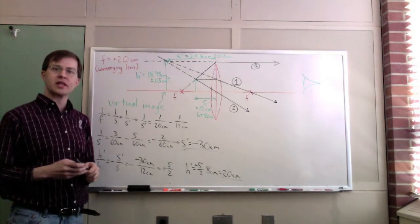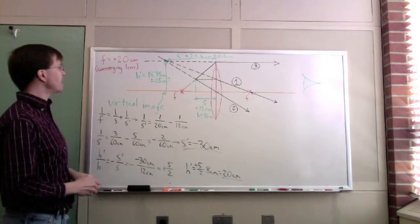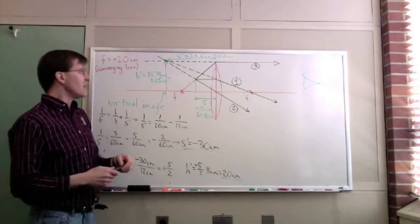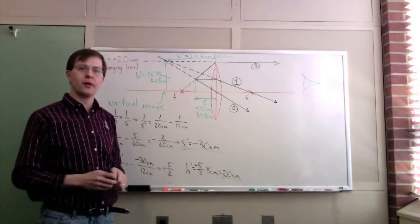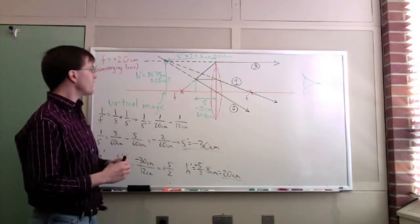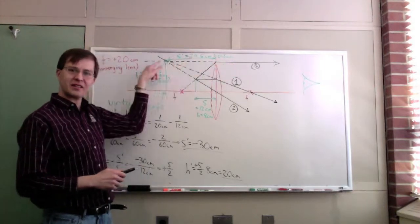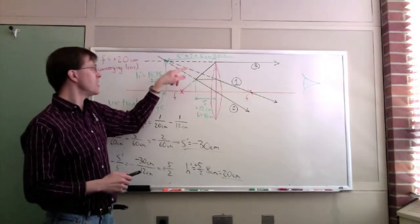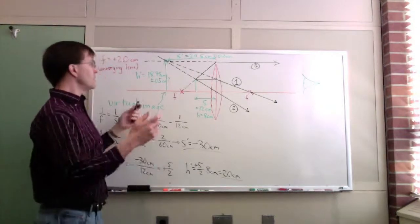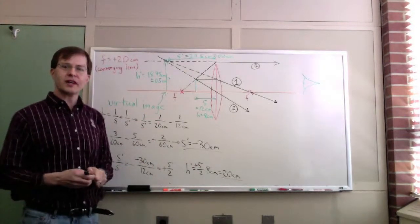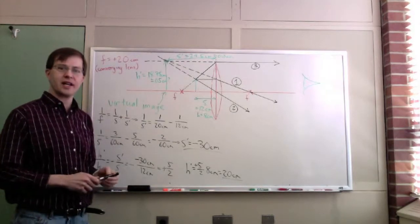That's another example of ray tracing with a double-check from the lens equation, and it works out well. The third principal ray is the trickiest one, but it's also often the most handy for finding the height or location of the image because of that nice parallel line on the exit side. Hopefully this gives you a sense of how ray tracing works with a converging lens when the object is inside the focal point.